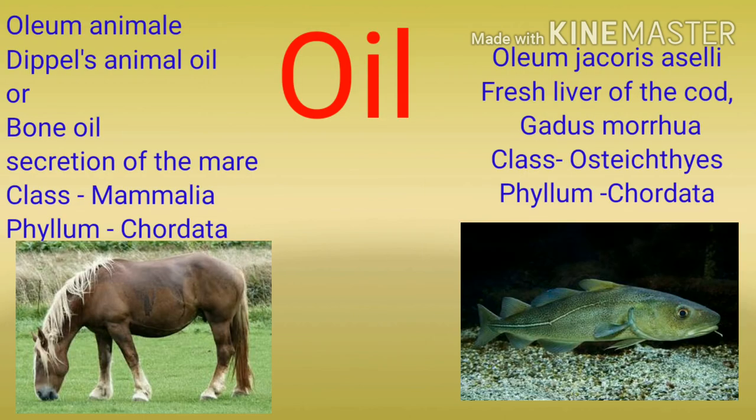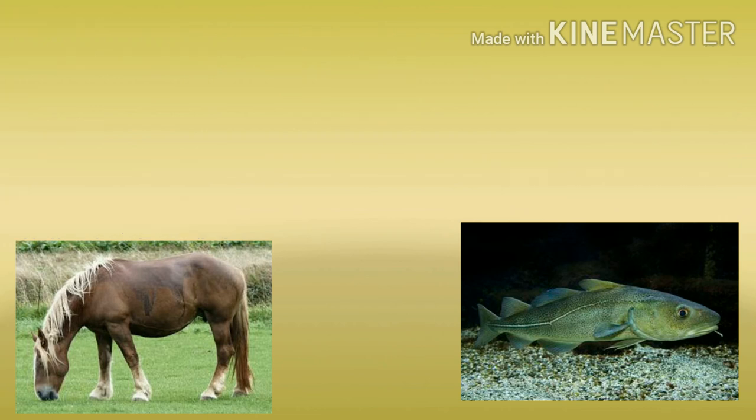Oil से बनने वाली medicines में दो examples हैं। First is Oleum animale, जो कि Dippel's animal bone oil commonly refer की जाती है, which is a secretion of the mare, class Mammalia, phylum Chordata। Second is Oleum jecoris, which is fresh liver of the cod, or Gadus morhua।